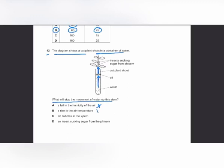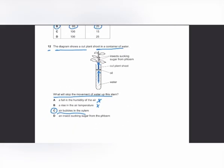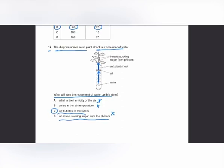Air bubbles in the xylem will block the xylem vessel and prevent water traveling up — that is the correct answer, C. An insect sucking sugars from the phloem has no effect on water movement in the xylem. The answer is C.